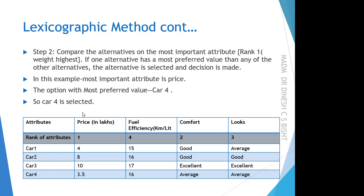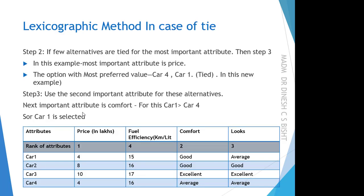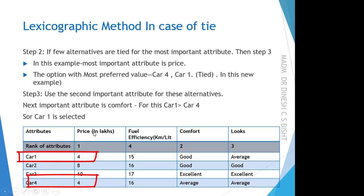One more case may arise. Consider a slightly modified example: Car 1 has a price of 4 lakhs, Car 2 has 8 lakhs, Car 3 has 10 lakhs, and Car 4 has 4 lakhs. In this case, Car 1 and Car 4 are tied on the price attribute, which is the most important attribute.